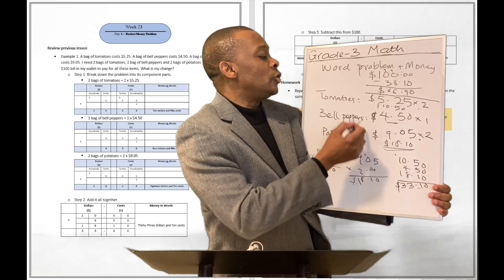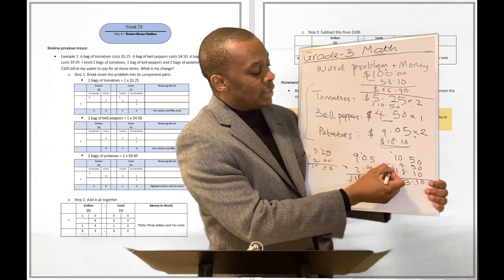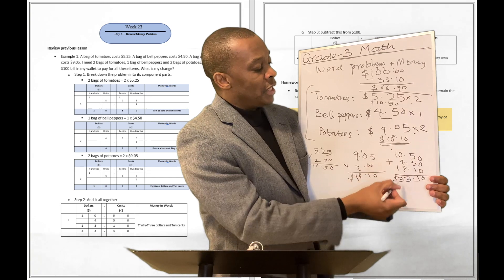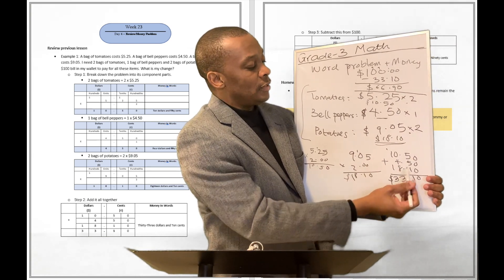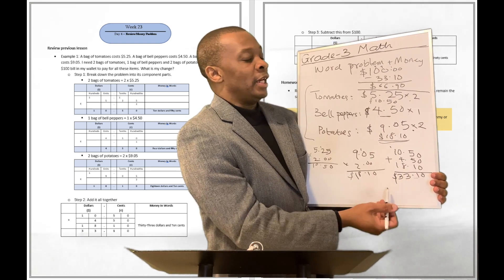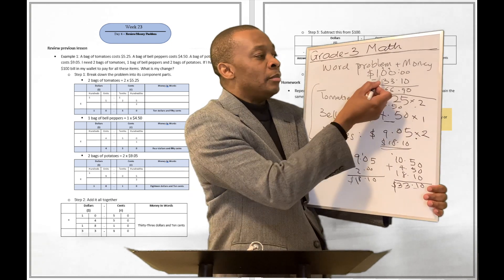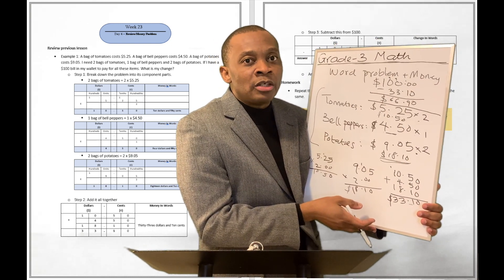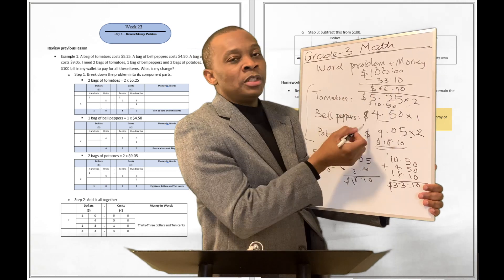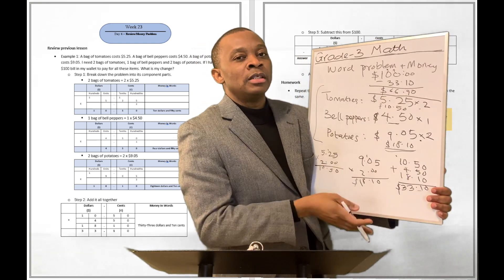Now, how much will all these items cost us? We added $10.50 together with $4.50 together with $18.10, and we got $33.10. But that's not the end of the story. I only have a $100 bill in my wallet to pay for all these items. What's going to be my change? That's a subtraction problem: $100 minus $33.10. If you do that subtraction, you're going to get $66.90.